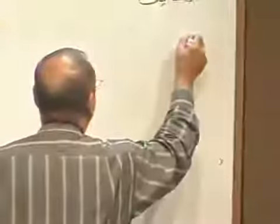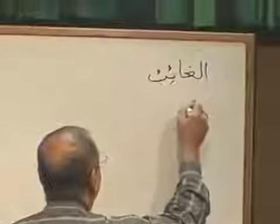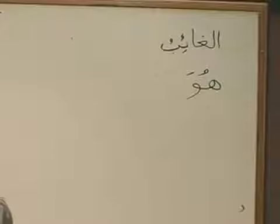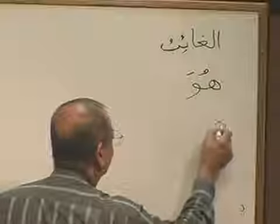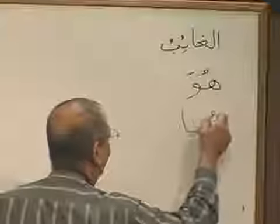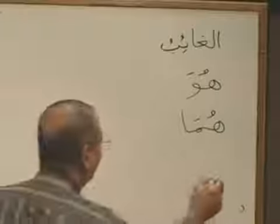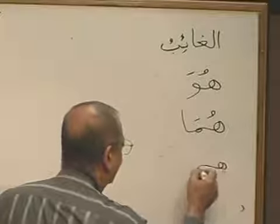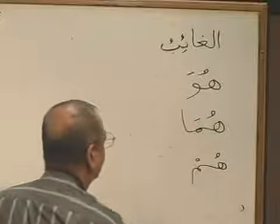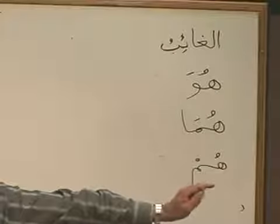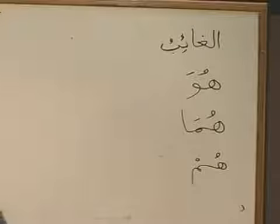We start with singular. And then dual — Huma. And what is plural, brothers and sisters? So: he — Hua, they two — Huma, and then they — Hum.